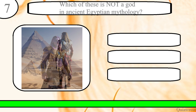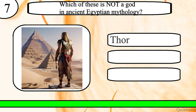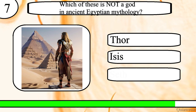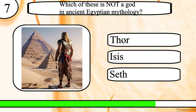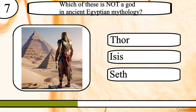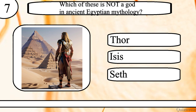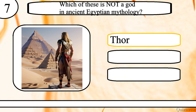Question 7. Which of these is not a god in ancient Egyptian mythology? Thor, Isis or Seth? The correct answer is Thor.